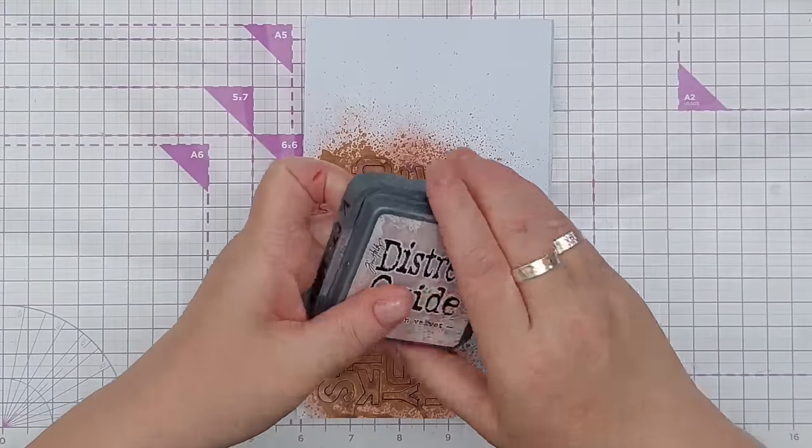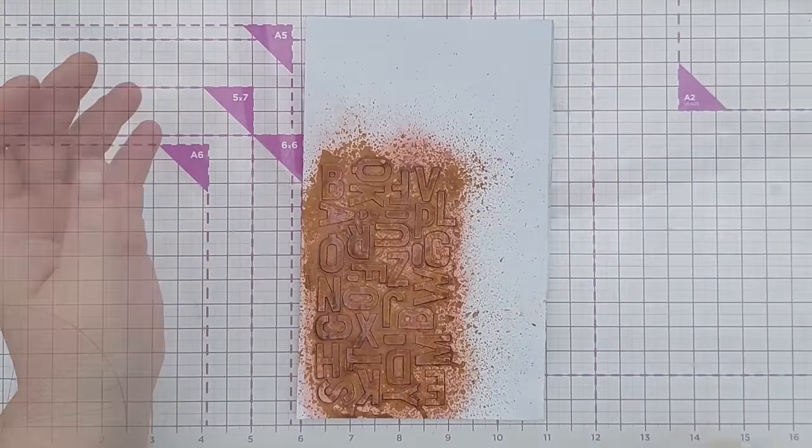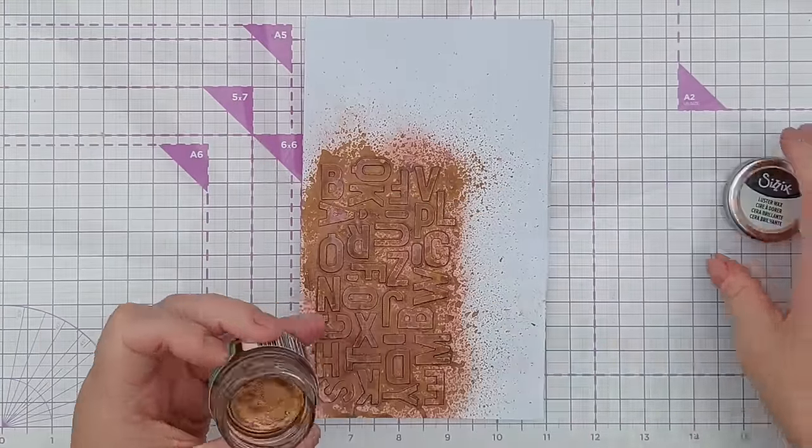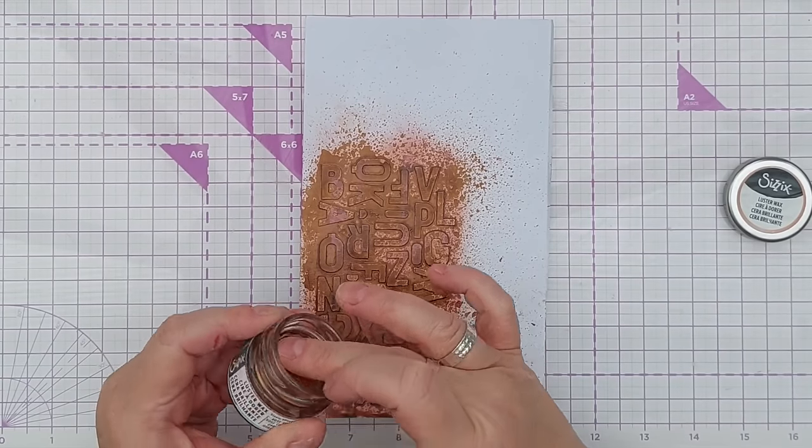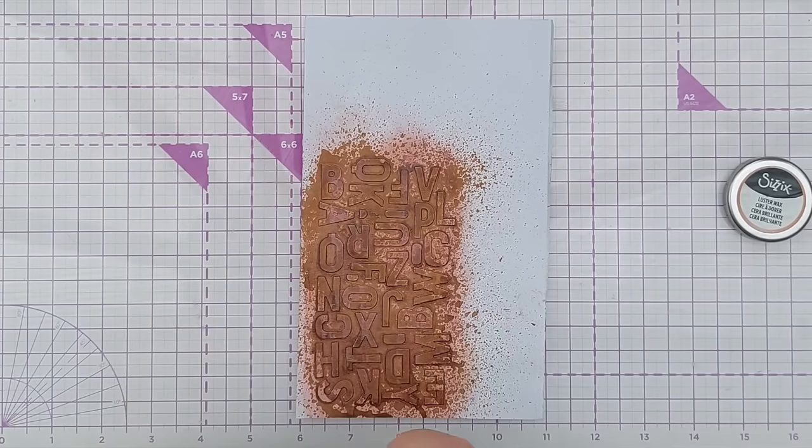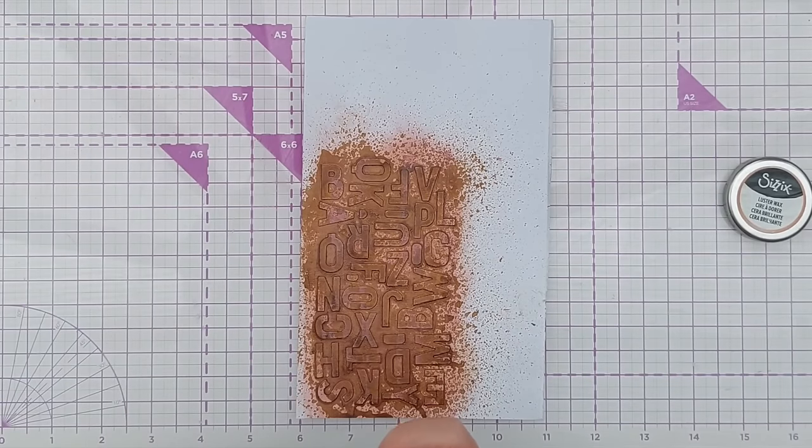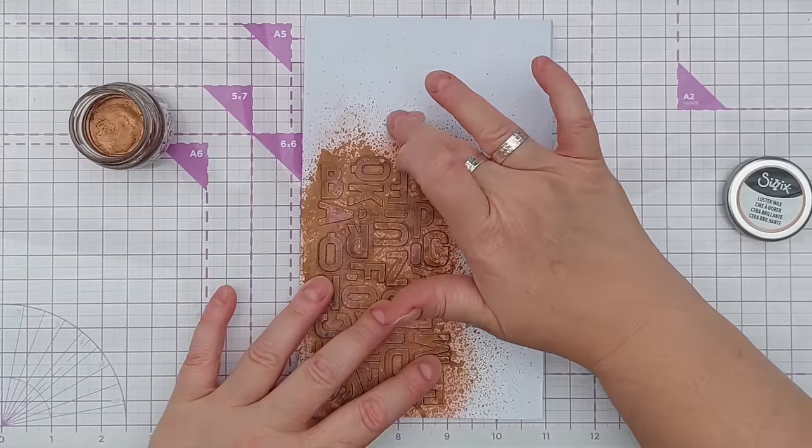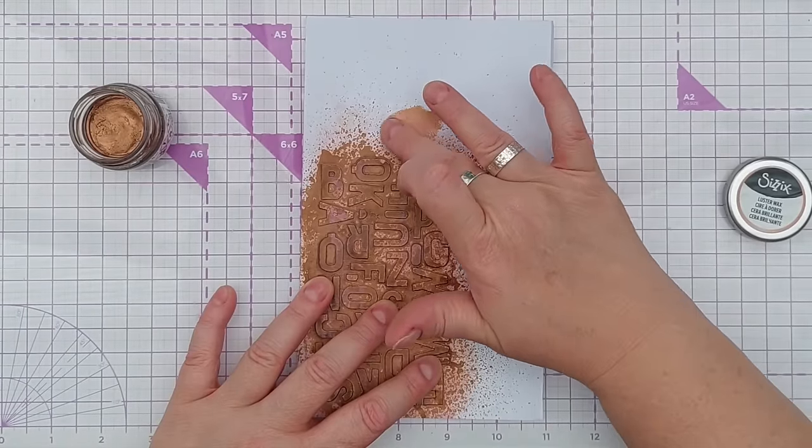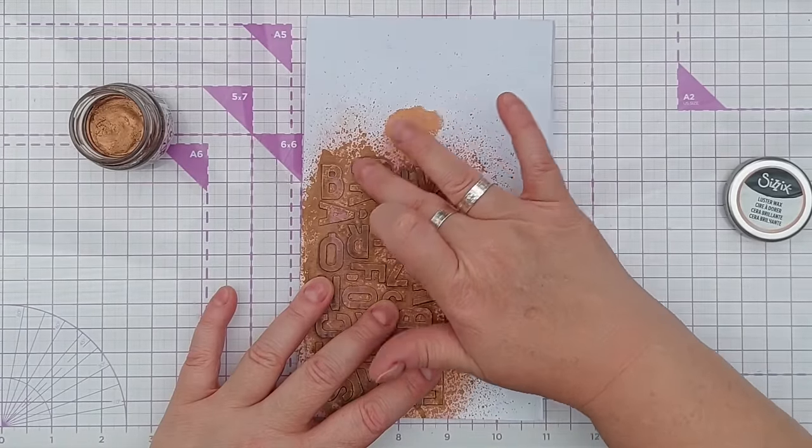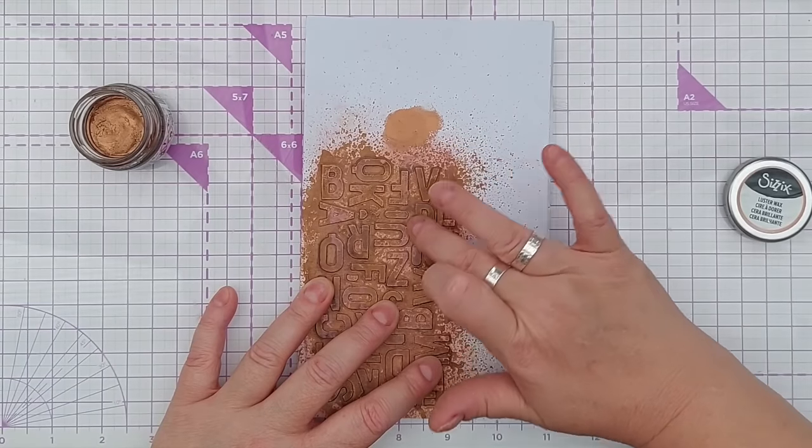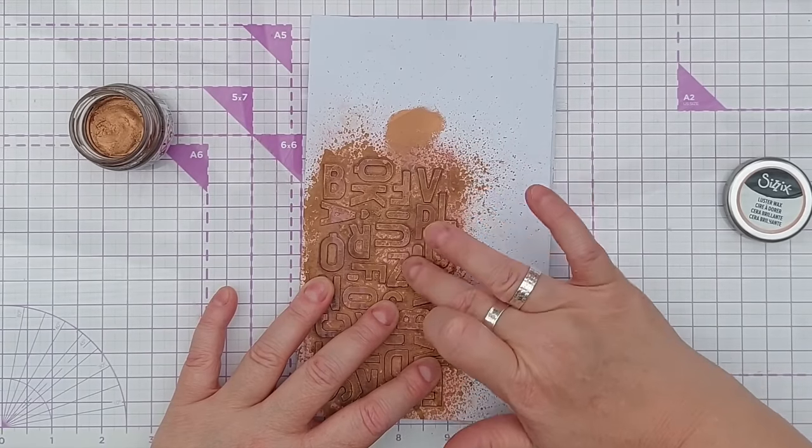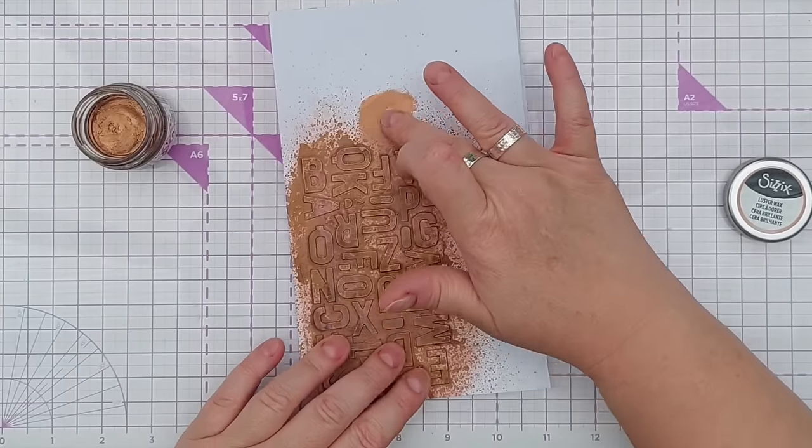You can just keep going as much as you like really with this, layering different things on top. And now for a final touch I've got some lustre wax from Sizzix in I think it's rose gold, yes rose gold. And I'll put a fair blob on my finger, just brush it off there, and then go over this and add another layer of lustre and that will bring out the letters even more.